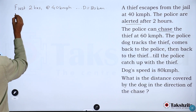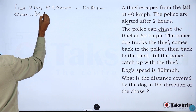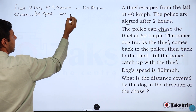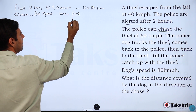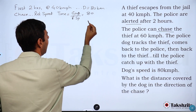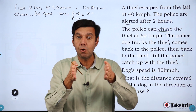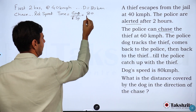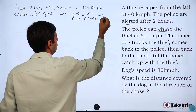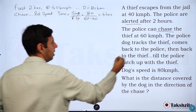The chase begins, and this is a question of relative speed. Time taken equals the gap between the objects at start divided by relative speed. The gap is 80 km, which was created in the first two hours. The relative speed, since they're in the same direction, is 60 minus 40 = 20. So the time taken to catch the thief is 80 over 20 = 4 hours.